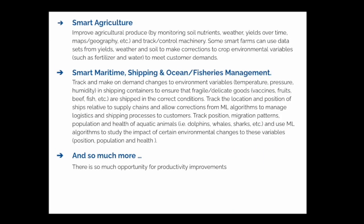We could also have IoT in smart agriculture — that's one of the fun parts, and maybe one reason I want to apply this to the smart flower pots. In agriculture, IoT can be used to monitor soil nutrients, weather, crop yield over time, and track machinery. Big tractors, harvesters, and farm machines are all connected to an IoT system and can be monitored to improve their efficiencies.